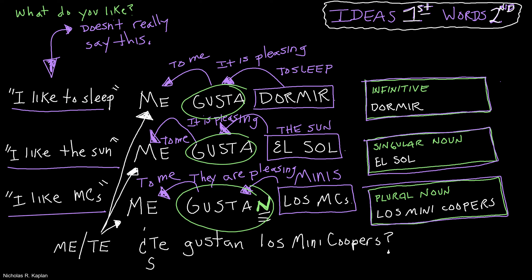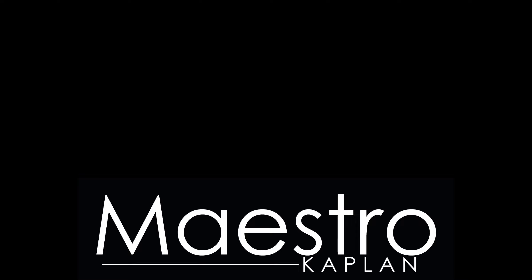Sí, maestro, of course I do. Sí, me gustan los mini coopers. In future videos, we're going to expand this to other people — he, she, it, we, y'all, they. We're going to expand it to other tenses. We're going to expand it to a whole bunch of other verbs. But for today, let's just talk about what I like and what you like. What do you like? Pick an infinitive, pick a singular noun, pick a plural noun. Write a couple sentences. Let me know if you have a question. Suerte.